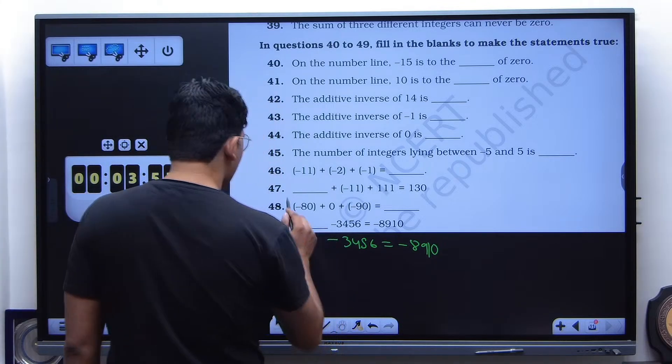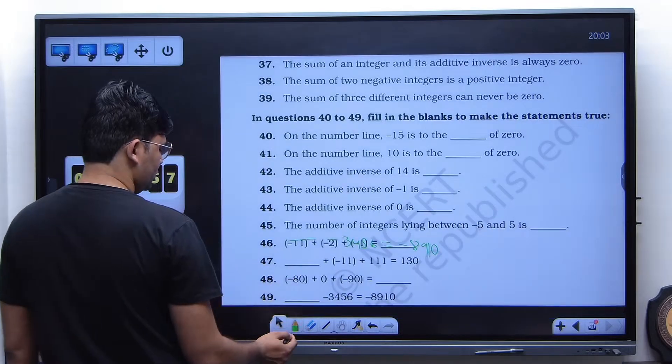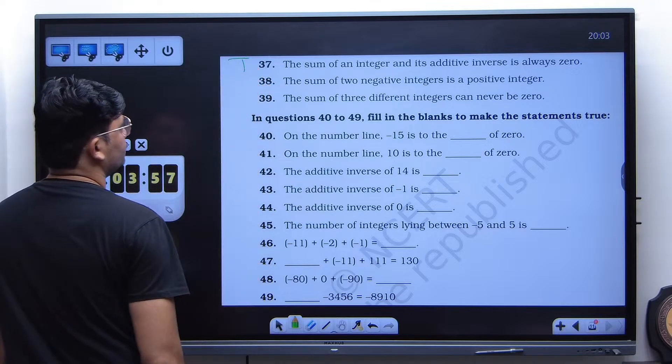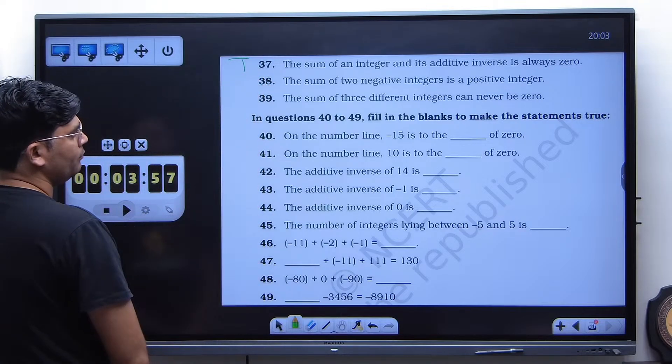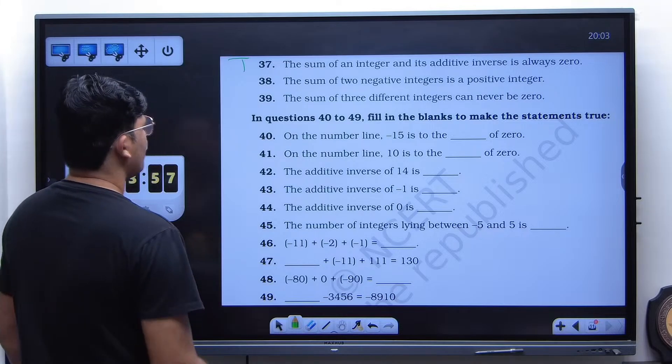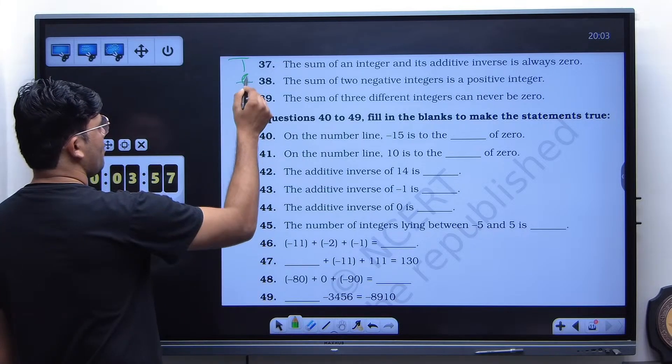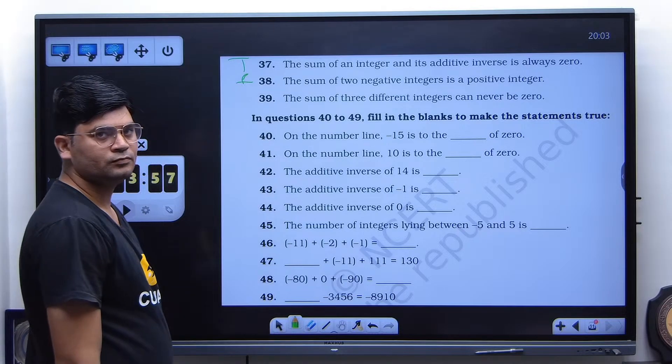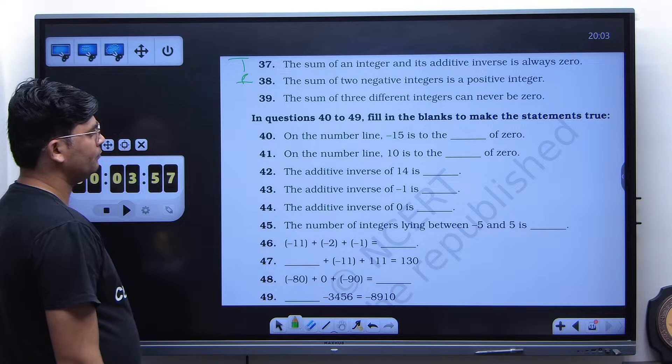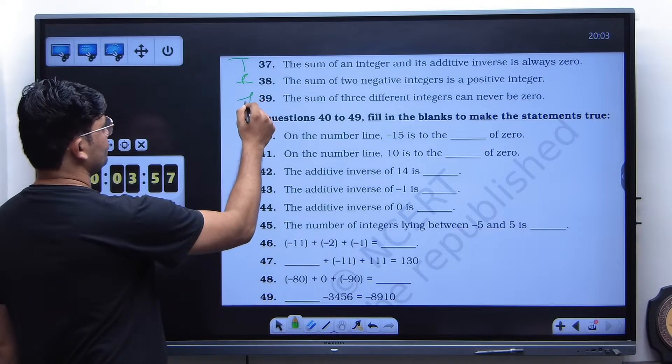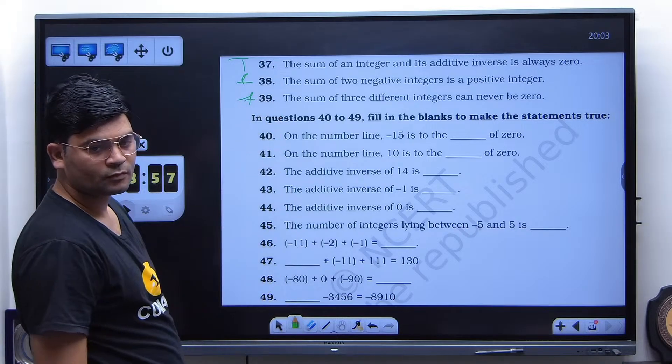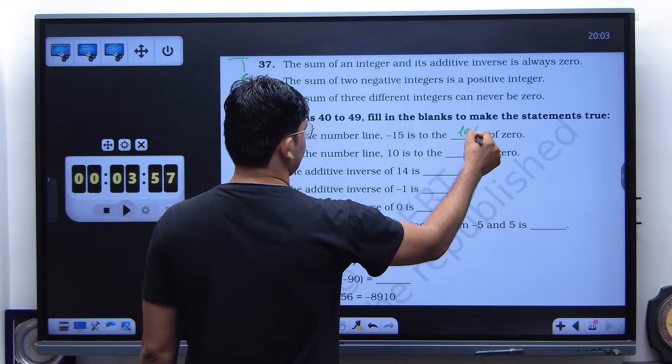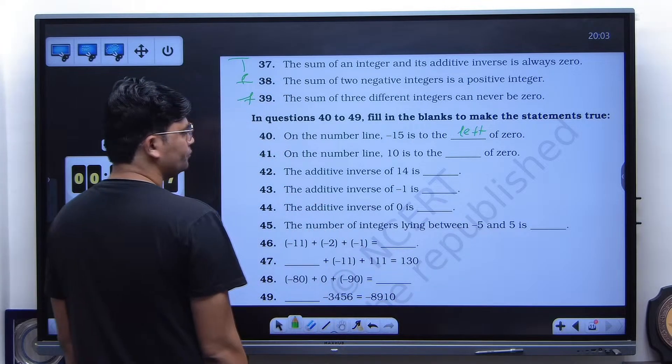First, 37. Wait, wait, wait. Yes. Is true. Okay. The 38 is false. 39 is false. 40 is left. 41 is right.